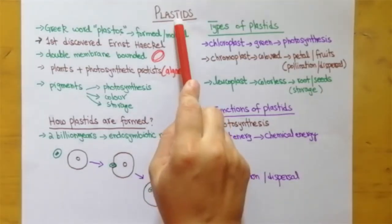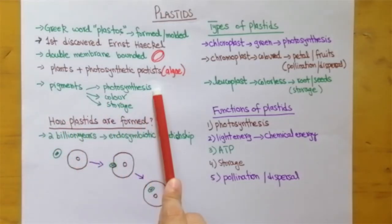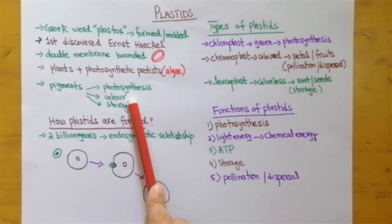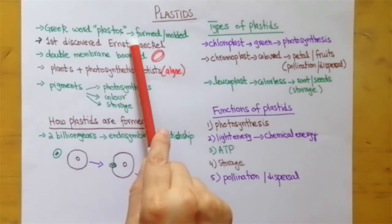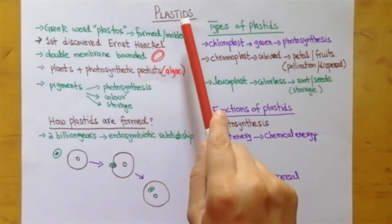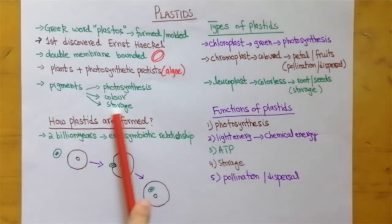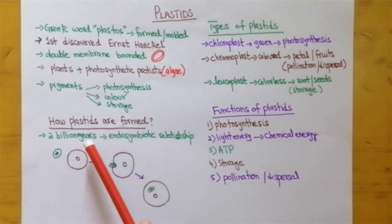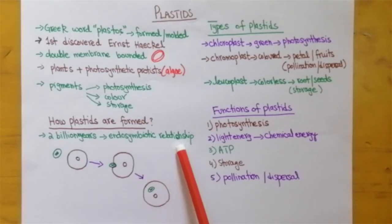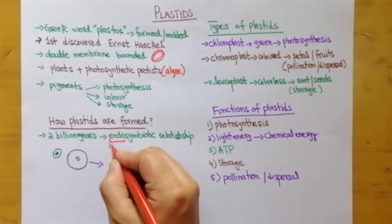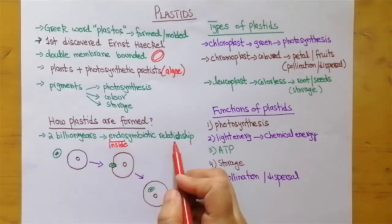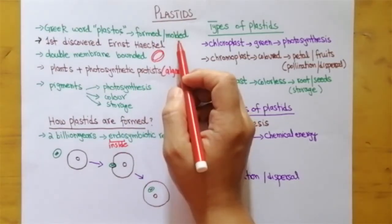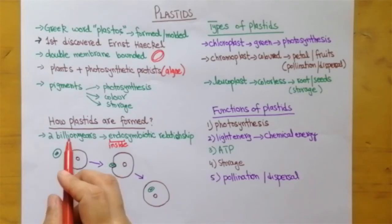Plastids are specialized to perform different functions: they can perform photosynthesis, give colors to the plant, and store different substances. The name 'plastid' meaning 'formed or molded' relates to how they were formed — about 2 billion years ago through the process of endosymbiotic relationship. 'Endo' means inside, so endosymbiotic means an inside symbiotic relationship. The plastids were formed or molded because of this endosymbiotic relationship.